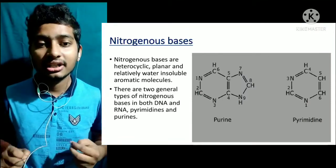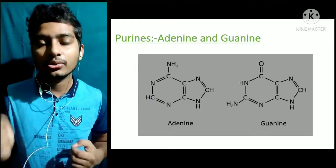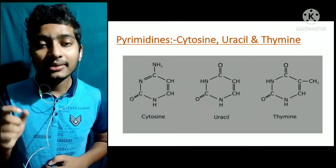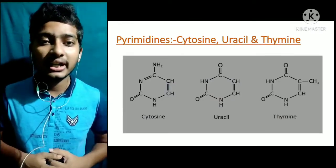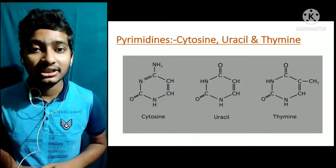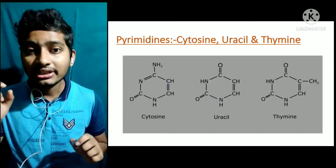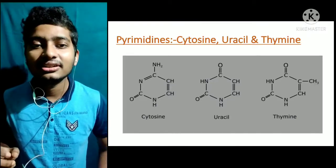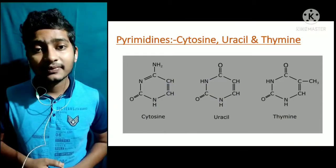There are two general classes of nitrogenous bases: purines and pyrimidines. Purines include adenine and guanine, whereas pyrimidines include cytosine, thymine, and uracil. Purines have a double ring structure and pyrimidines have a single ring structure. Adenine, which is a purine, bonds with thymine or uracil, which are pyrimidines.